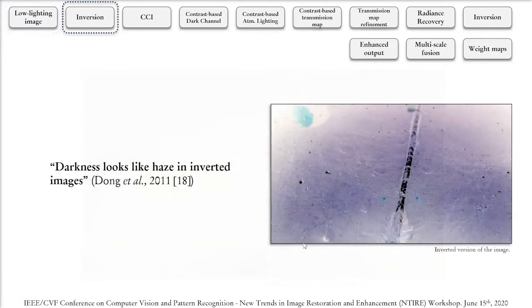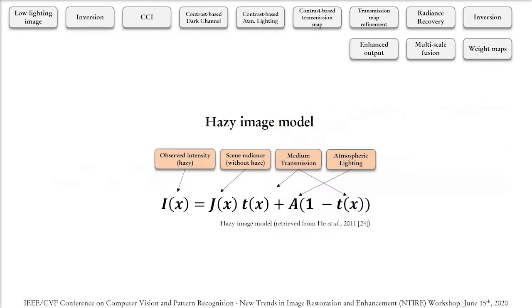We then consider the observation that darkness looks like haze in inverted images by Dong et al. Our strategy is to invert the image, use contrast to dehaze it, and then invert the image once again.